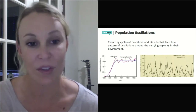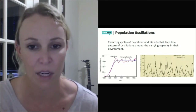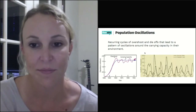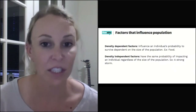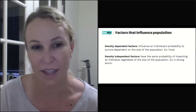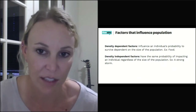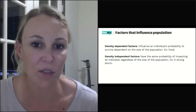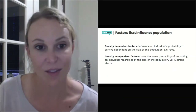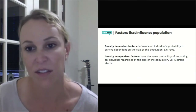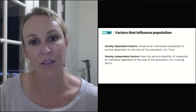Although we look at population and carrying capacity as being like a straight line, in reality it's an oscillation going up and down over and over depending on what's going on in that environment. Density-dependent factors are things that influence an individual's probability to survive depending on the size of the population — that's what we've been talking about with carrying capacity. Those include food, water, shelter, space, and predators.